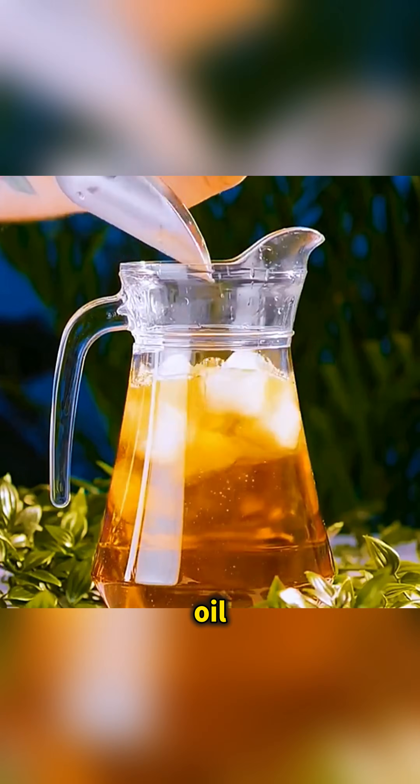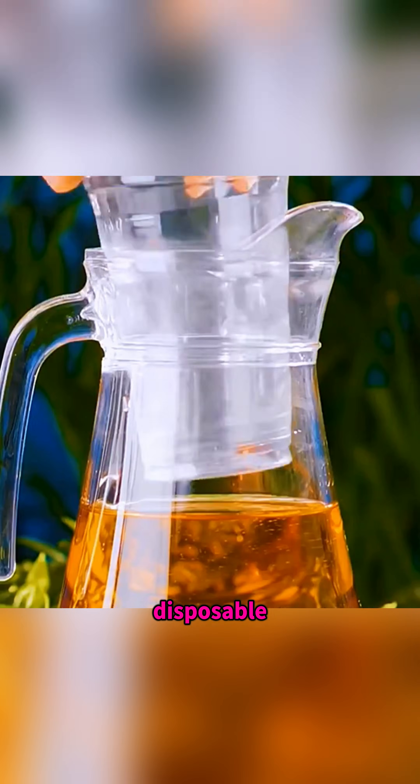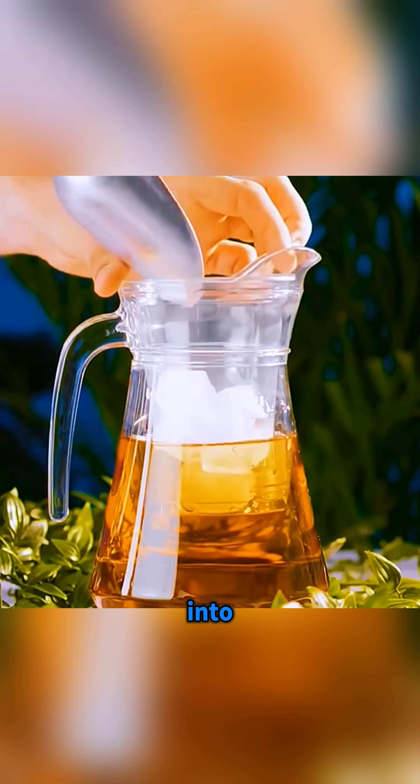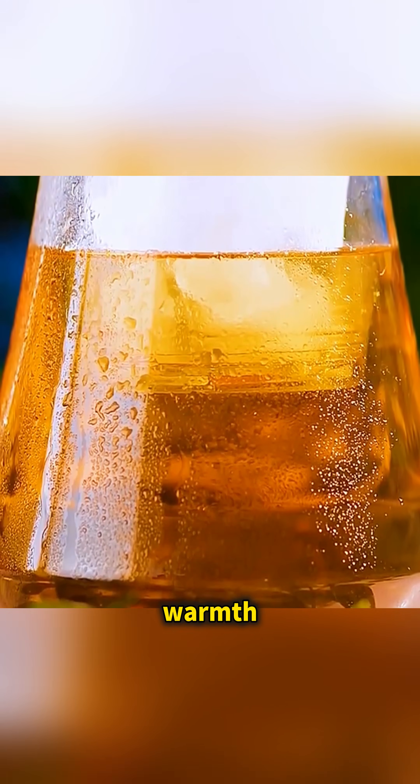In a container filled with vegetable oil, drop in some ice cubes and they melt away quickly. But when you place a disposable cup in the oil and pour the ice into the cup, the cubes melt much more slowly, almost like they're hiding from the warmth.